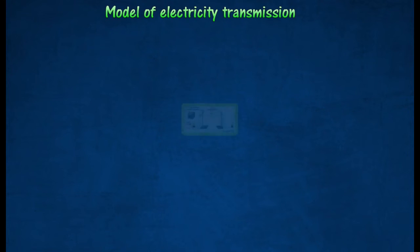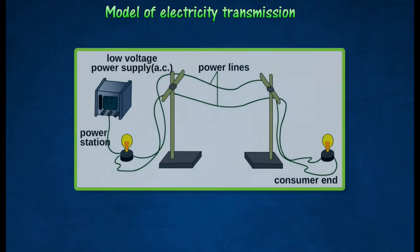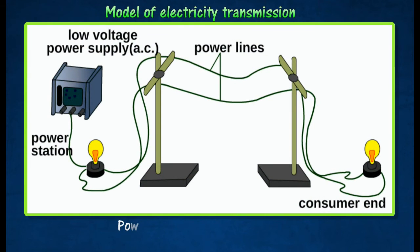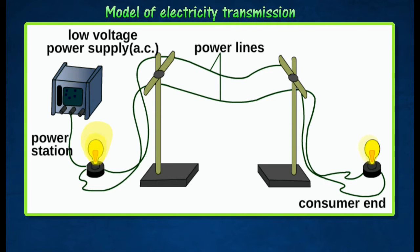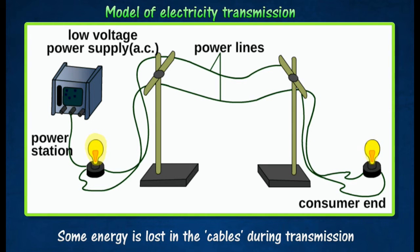The following figure shows a simple model for the transmission of electricity. The low voltage power supply represents the power station, while the two pieces of resistance wire represent the transmission cables. When the power supply is switched on, the lamp at the power station is lighted up brightly, while the lamp at the consumer's end only glows dimly. The different brightness of the two lamps shows that some energy is lost in the cables during transmission.